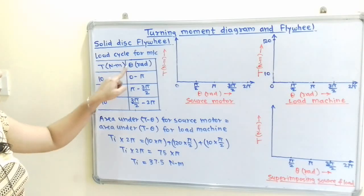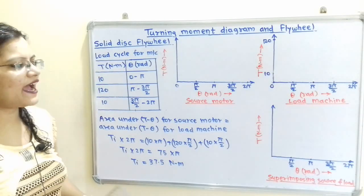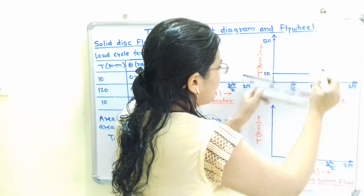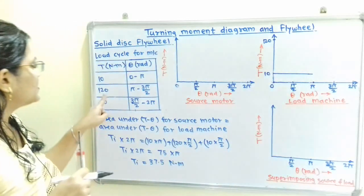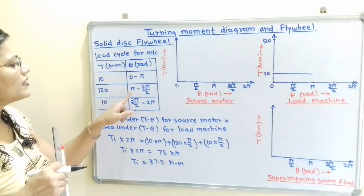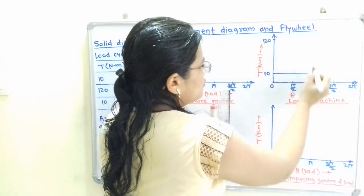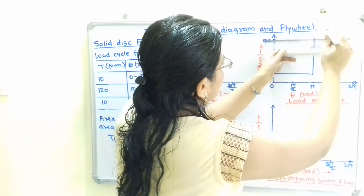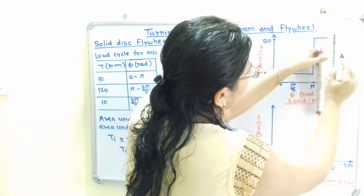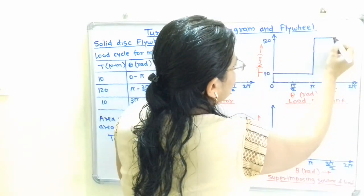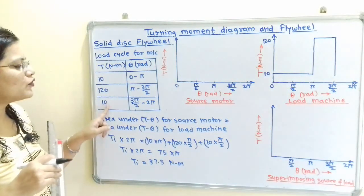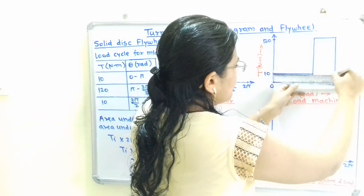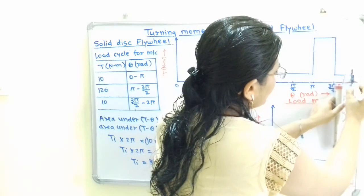For torque 10 Nm during angle 0 to π, we draw a horizontal line up to angle π. Then for torque 120 Nm during π to 3π/2, we draw a vertical line at π and extend a horizontal line at 120 Nm up to 3π/2. Then for 10 Nm during 3π/2 to 2π, we again extend the line at 10 Nm and finish at 2π.